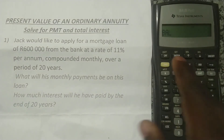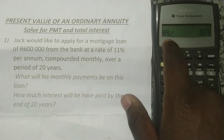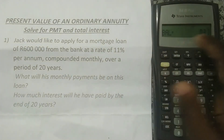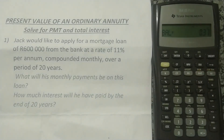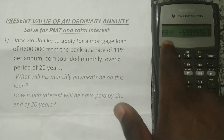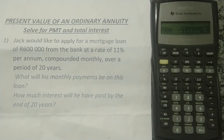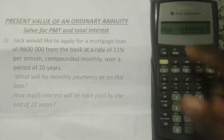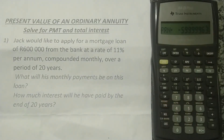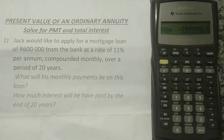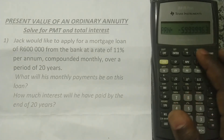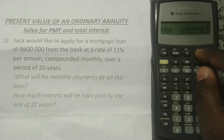Pressing the down arrow shows the balance — how much is still owed — which is just 37 cents. By the end of 240 months the mortgage is fully paid. Pressing down again shows PRN — the principal paid — which is R599,999, rounding to R600,000. The full principal has been paid off.